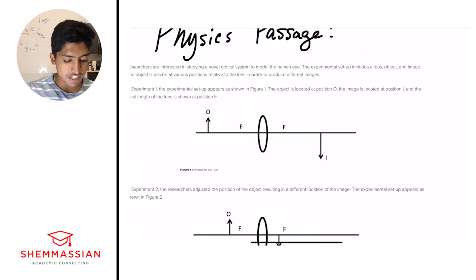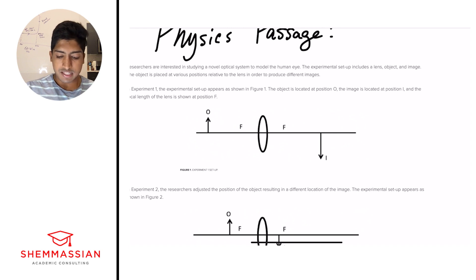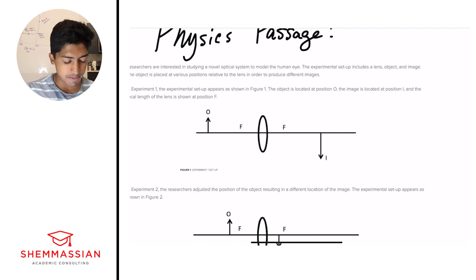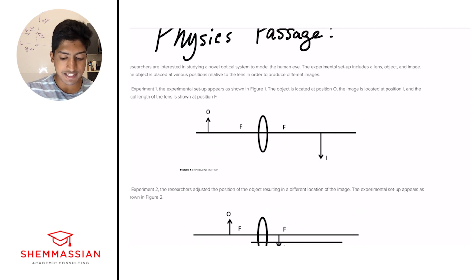Researchers are interested in setting a novel optical system to model the human eye. The experimental setup includes a lens, object, and image. The object is placed at various positions relative to the lens in order to produce different images.